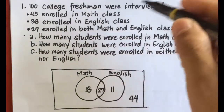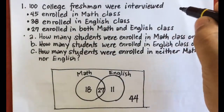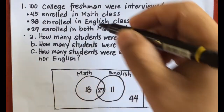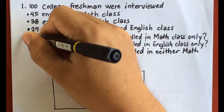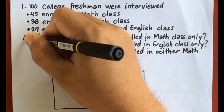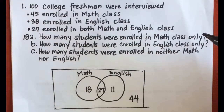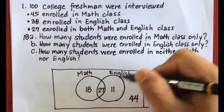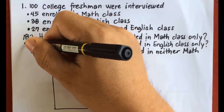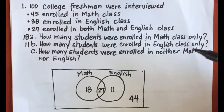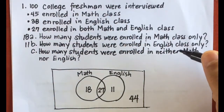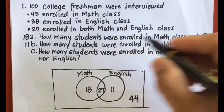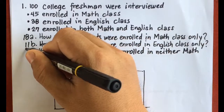To answer the questions: how many students were enrolled in math class only? Looking at the Venn diagram, the answer is 18. Students enrolled in English class only — the answer is 11. And how many students were enrolled in neither math nor English? The answer is 44.